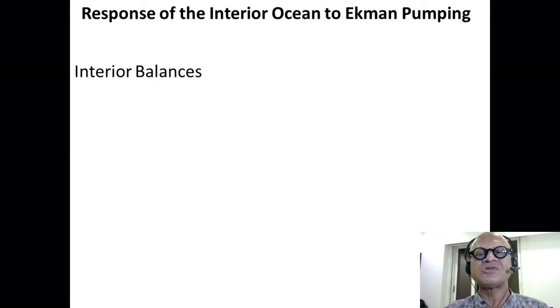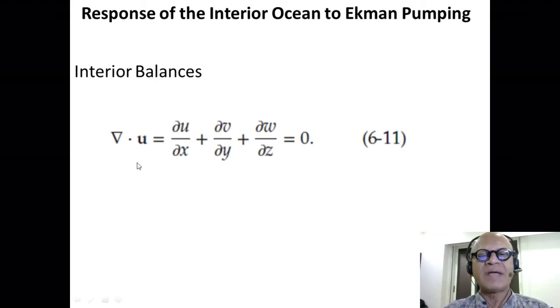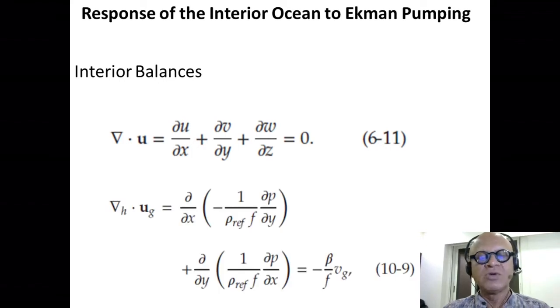Okay, so response of the interior to Ekman pumping. Let's write the interior balance. Again, sticking with our incompressible fluid low Rossby number, writing our non-divergence relation. We will now write geostrophic divergence in the horizontal. We are now away from the frictional layer. d/dx of minus 1 over rho_ref f dp/dy. That's our geostrophy. d/dy of 1 over rho_ref f dp/dx and we are going to introduce something here that turns out to be very important for ocean circulation.